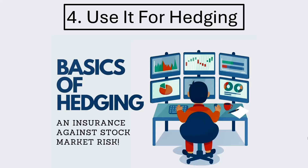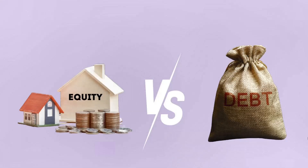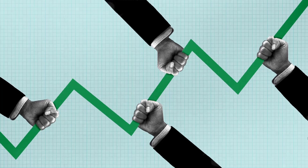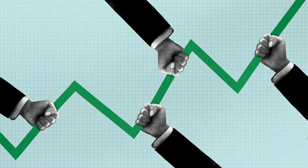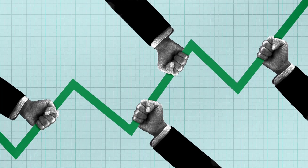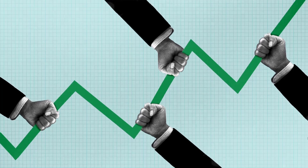Advantage number four: use it for hedging. Some investors use the concept of RCA to hedge their investments. They divide their total investment into two equal portions — they invest the first portion in equity SIPs and the second in debt SIPs. Generally, when the equity market rises, debt market growth remains muted, and vice versa. The hedging strategy ensures that their net fund value never goes below the original amount.